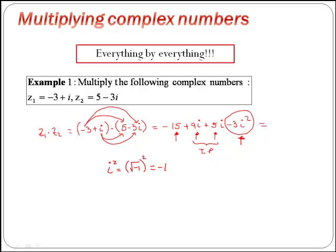Therefore, this part here will become a real part. So we have minus 15 plus 9i plus 5i minus 3i, and instead of i squared, I'm going to write minus 1, which gives minus 15 plus 9i plus 5i plus 3.